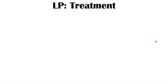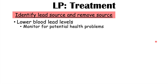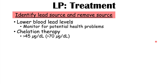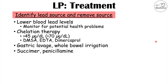When a clinician has diagnosed lead poisoning, treatment begins with identifying and removing the lead source. Treatment depends on the lead level. If the blood lead level is near 5 micrograms per deciliter, monitor for potential health problems and reassess the patient. As the lead level increases, chelation therapy becomes important — especially if the level is greater than 45 micrograms per deciliter, and is the mainstay of treatment above 70 micrograms per deciliter. Chelation therapy can be undertaken using DMSA, EDTA, or dimercaprol. Gastric lavage and whole bowel irrigation may also be used to reduce absorption of ingested lead. Succimer and penicillamine can also be used.